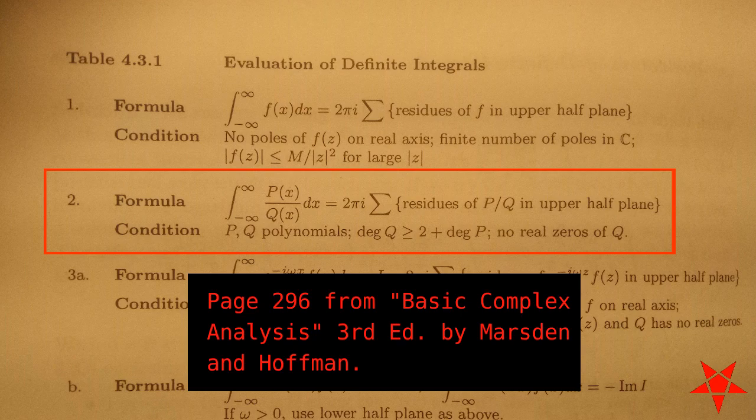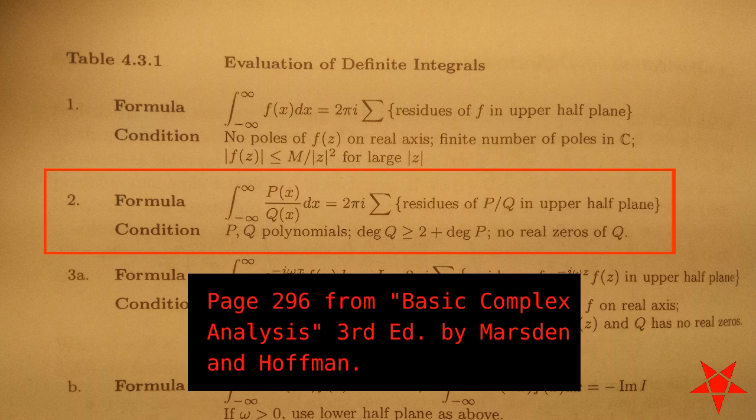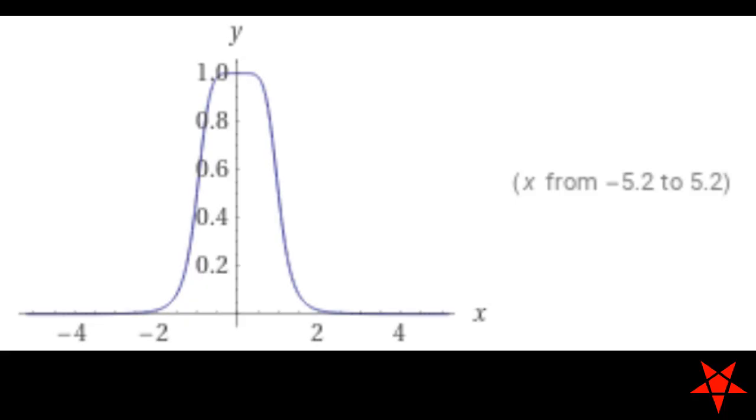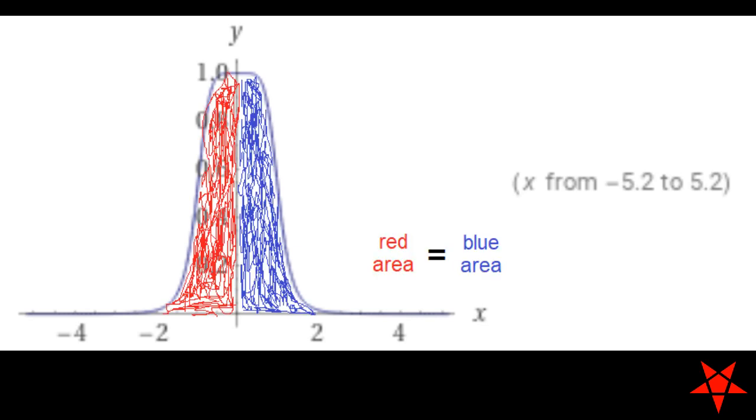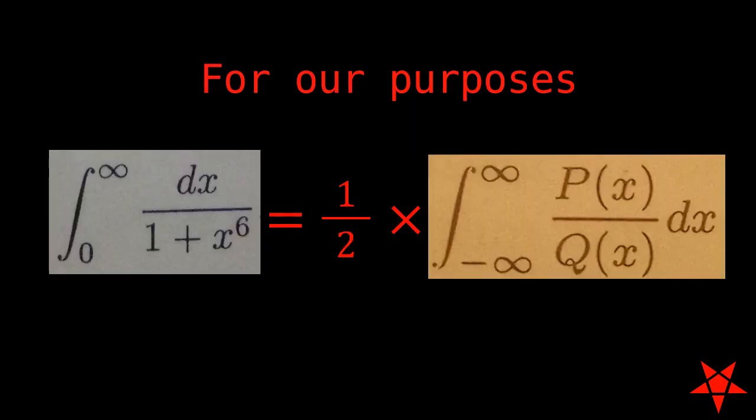Condition number 2 in Table 4.3.1 on page 296 of Marsden and Hoffman tells us that if our integrand is made up of the quotient of two polynomials, p and q, and the degree of q is greater than or equal to that of p plus 2, then we can utilize residue theorem to evaluate the integral. This method assumes integration from minus to positive infinity. However, 1 over 1 plus x to the sixth is an even function, so the answer will be half that of the integral from Table 4.3.1.